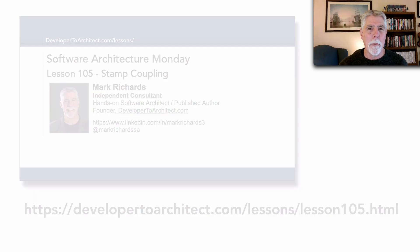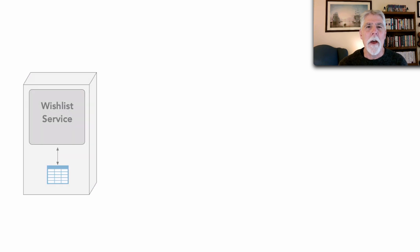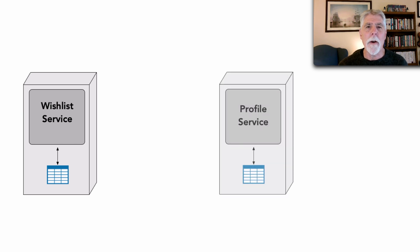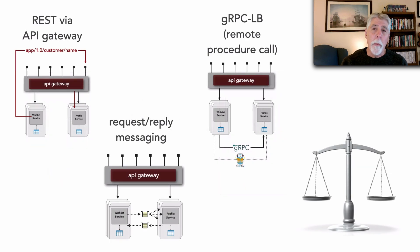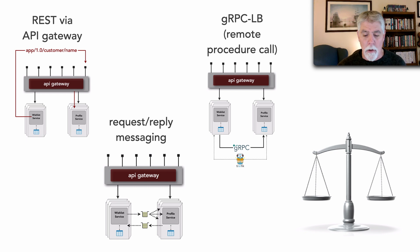For each of these three protocols we're going to look at a scenario where we have a wish list service that maintains our customers' wish lists. We also have a customer profile service with name, address, bill-to, ship-to, and all that information. The scenario is that the wish list service needs to get the name of a customer, but it only has a customer ID, so it must get that information through the profile service.